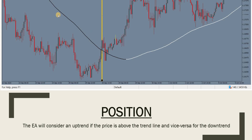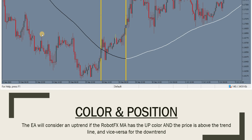The second option is the position of the price relative to the trend line: if the price is below the moving average, it's a downtrend, and vice versa for buys. The third option combines both criteria — color and position. For the expert advisor to sell, the price must be below the moving average and it must be black; to buy, price must be above and the trend line must be white. In the area between those two criteria, the expert advisor does nothing, which avoids trading during consolidations or trend changes.